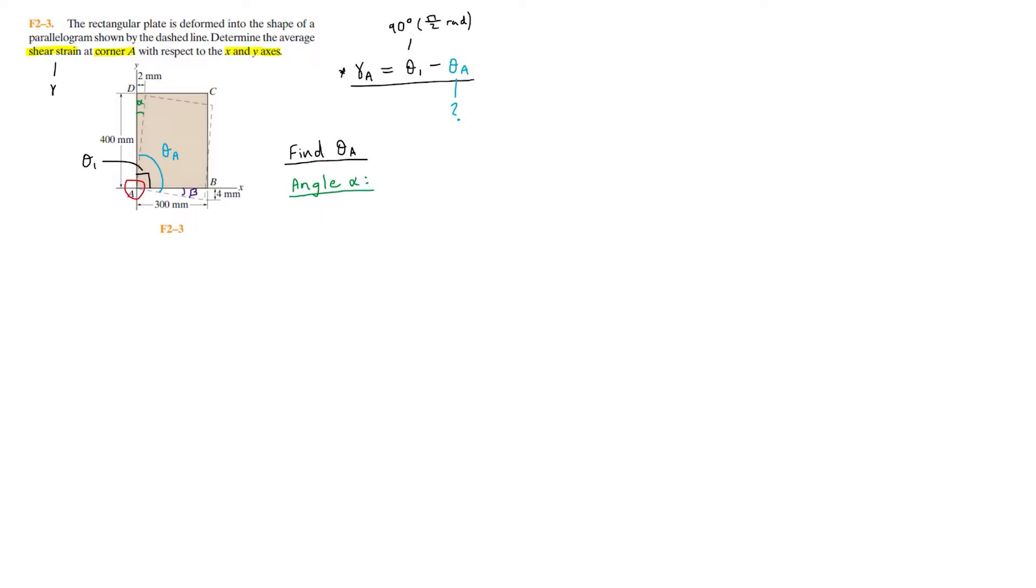Starting off with angle alpha, from the diagram, this forms a right triangle with the y axis, where this length up here is two millimeters, which is the deformation, and then 400 millimeters, which is the length between point A and point D. We have a right triangle with two known sides, so we can use trigonometry, particularly tangent theta, since tangent theta equals opposite over adjacent. Alpha equals tangent inverse of the opposite side over the adjacent. So this will be tangent inverse of two over 400, which is roughly 0.2865 degrees.